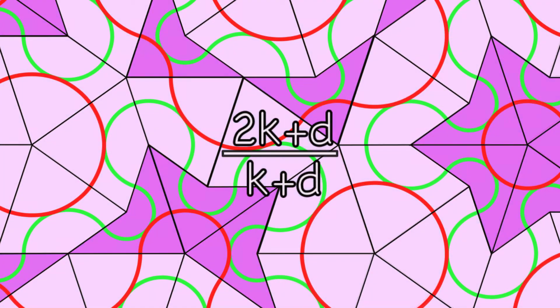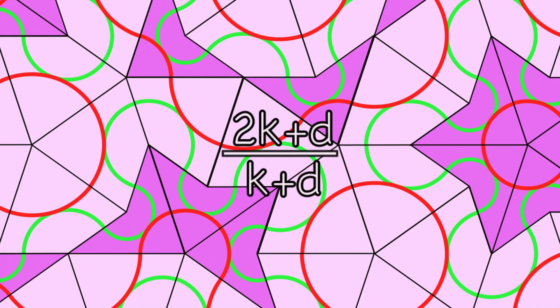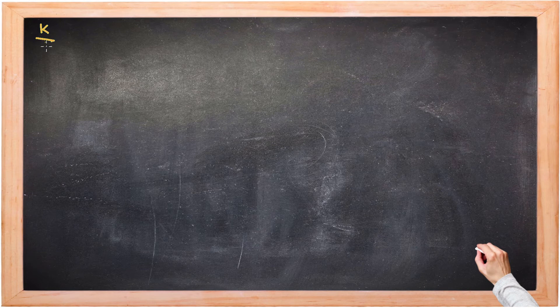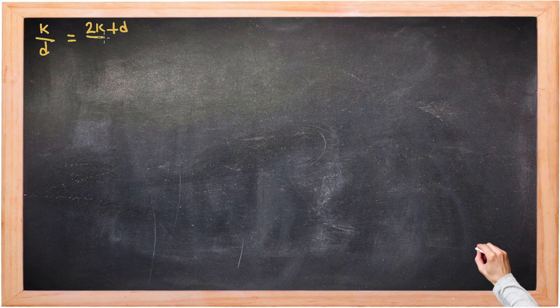And because they're infinite tilings, these two expressions must be equal. k over d must be the same as 2k plus d over k plus d. Now let's use that fact and do some mathematical analysis. So for this infinite tiling, this Penrose tiling, k over d is the same as 2k plus d over k plus d.